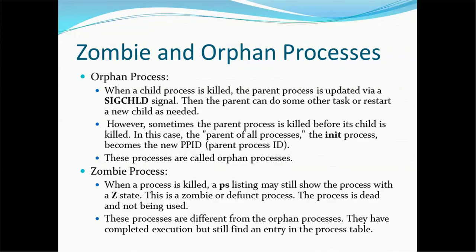However, sometimes the parent process is killed before its child is killed — you kill the parent without killing the child. In such cases, the init process becomes the new parent, with a new PPID associated. These processes are called orphan processes because their parents got killed without the child being killed.